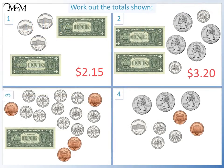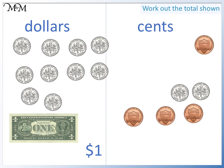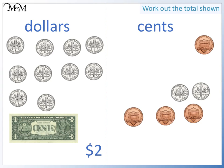Question three: we have one dollar, and we have ten dimes, which make another dollar. Looking at the cents, we have two dimes, so twenty cents, and four one-cent coins, giving us a total of twenty-four cents. So we have two dollars and twenty-four cents, which we write as two dollars twenty-four.